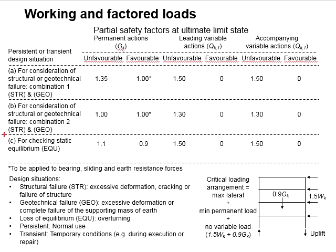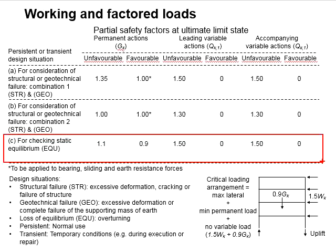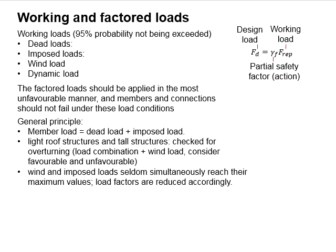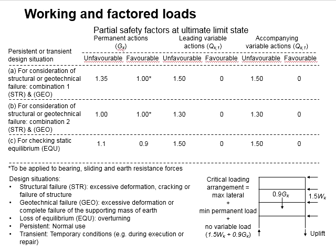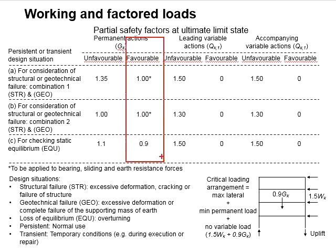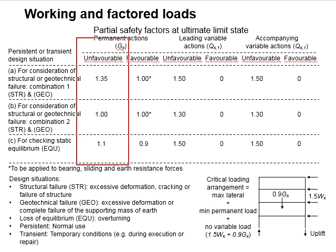When analyzing for the overturning of the entire structure, you refer to the static equilibrium category. When analyzing loading, you need to consider the most unfavorable conditions. To find the most critical scenario, we consider whether each action is favorable or unfavorable to stability. Actions favorable to stability are assigned a lower factor of safety, while those unfavorable — harmful to the structure — are assigned the maximum factor of safety, leading to the most critical design conditions.